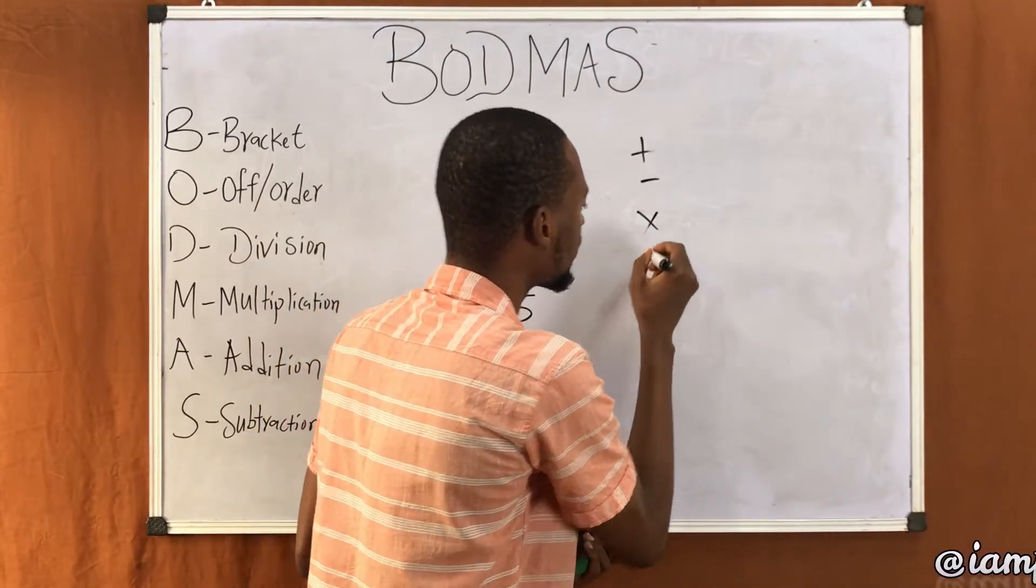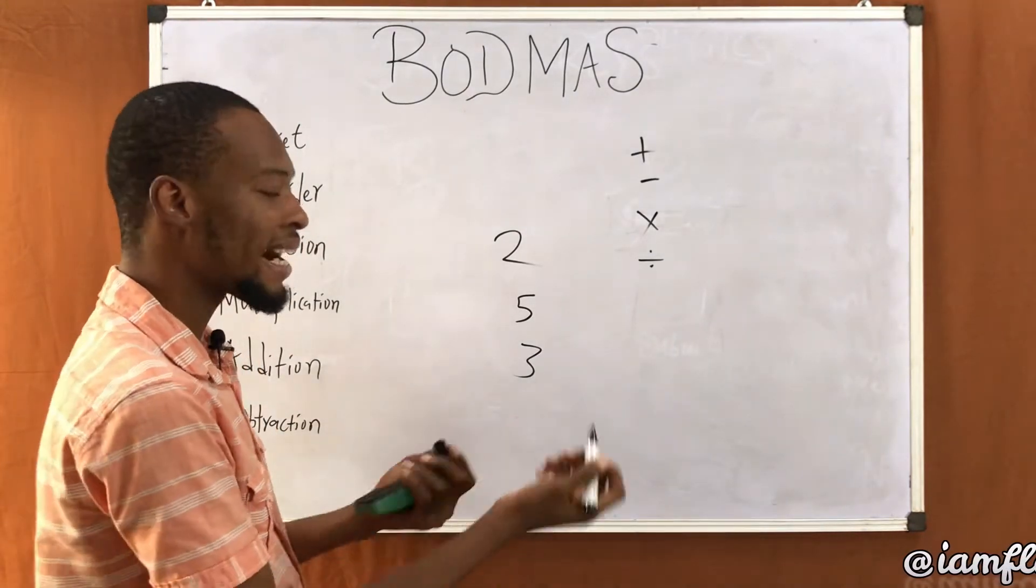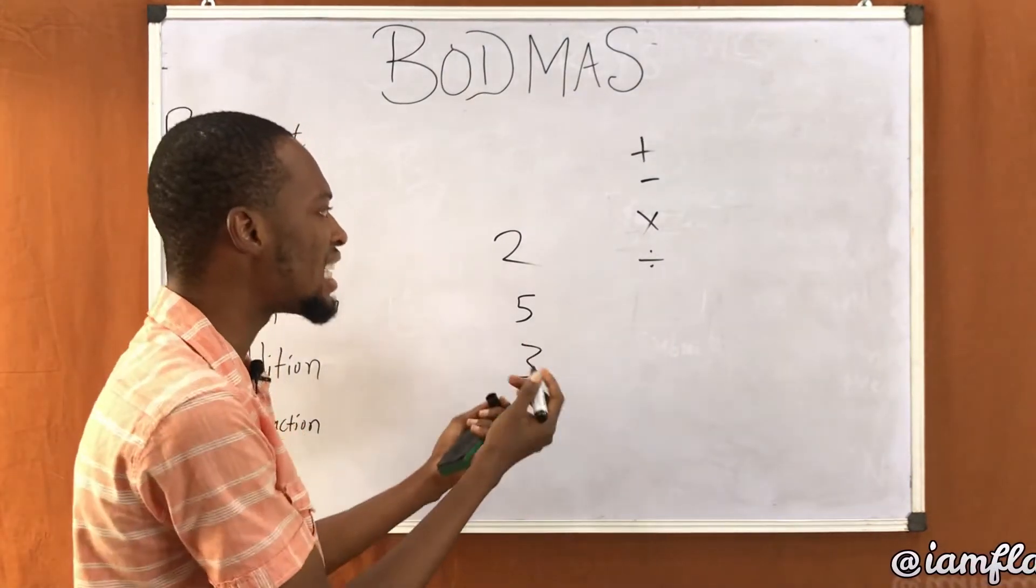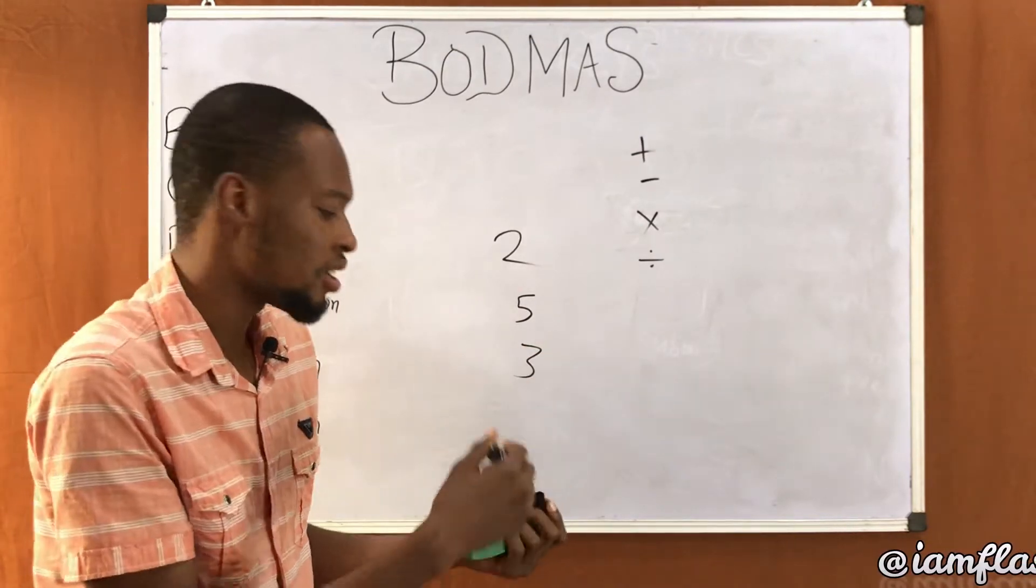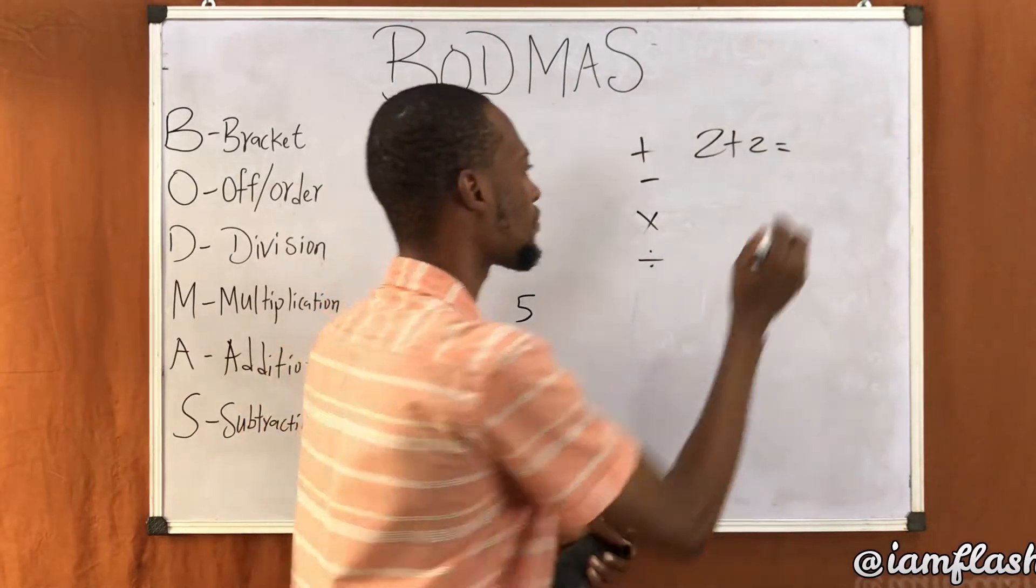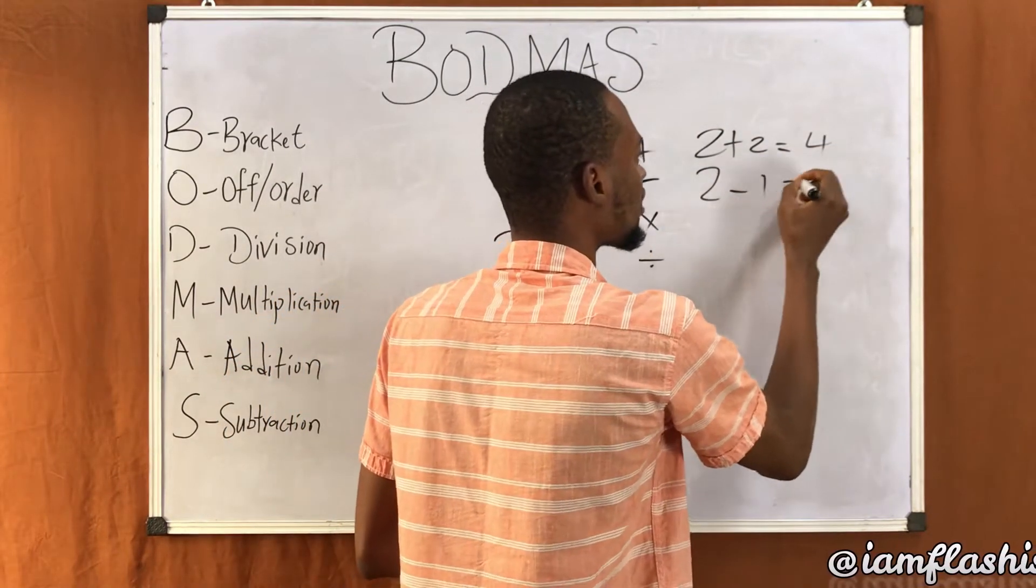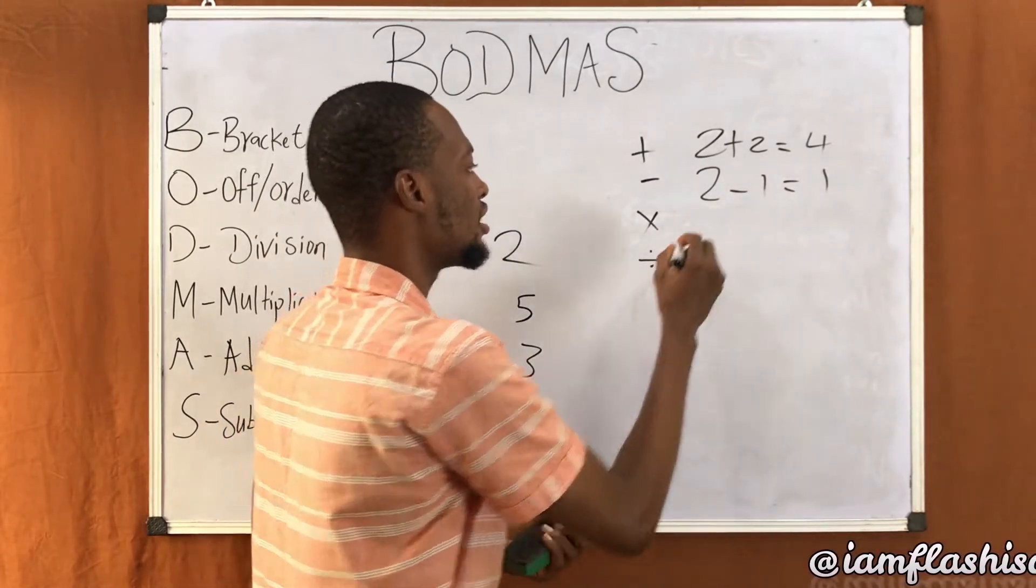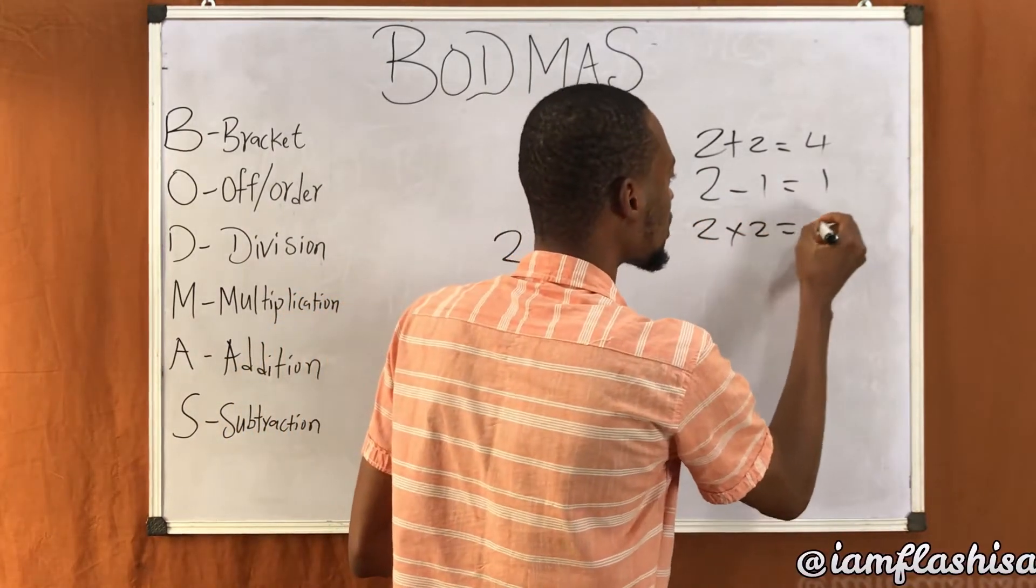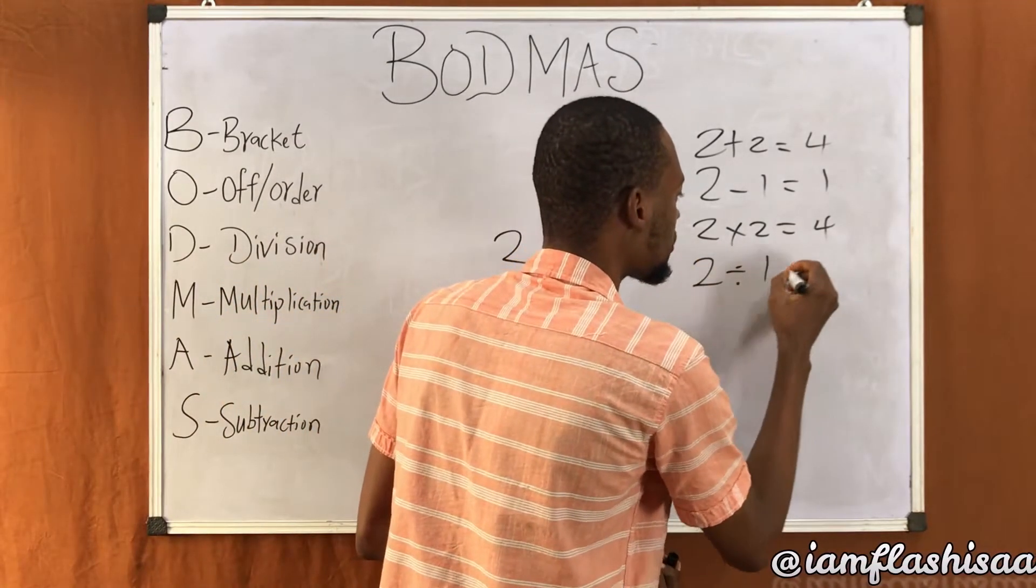So if you are given two numbers to add, multiply, divide, it's very easy. For example, two plus two you simply say four, correct. Two minus one is one, correct. Two times two equals four, correct. Two divided by two equals one, correct. They are very easy.